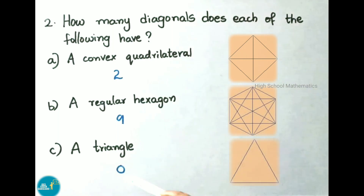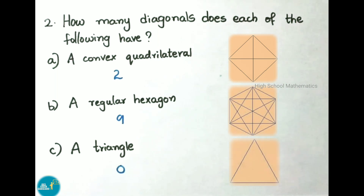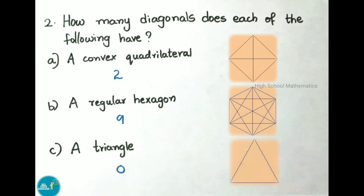So we represent the triangle's diagonal count as 0. If we observe in the figures, we can see that a convex quadrilateral has 2 diagonals, a regular hexagon has 9 diagonals, and a triangle has no diagonals.